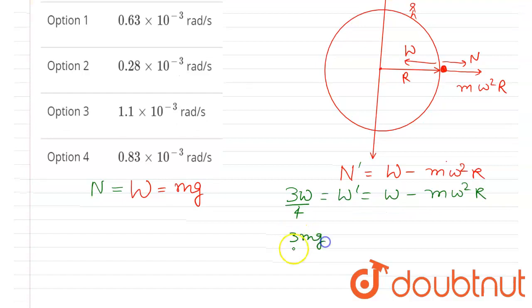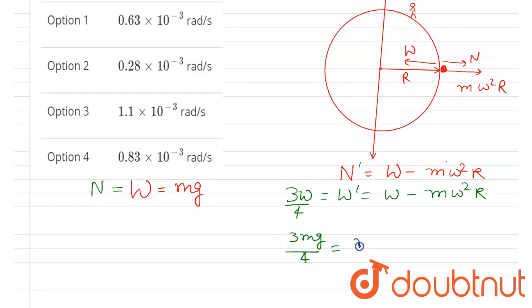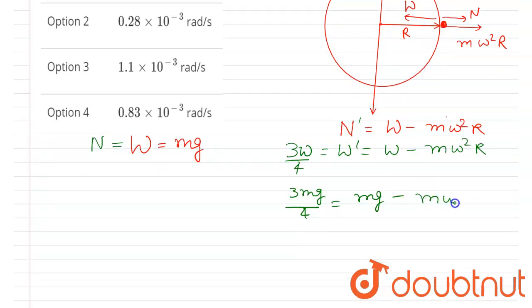Now you can cancel this m, right? So you can see you will get ω²·R is equal to g minus 3g/4.